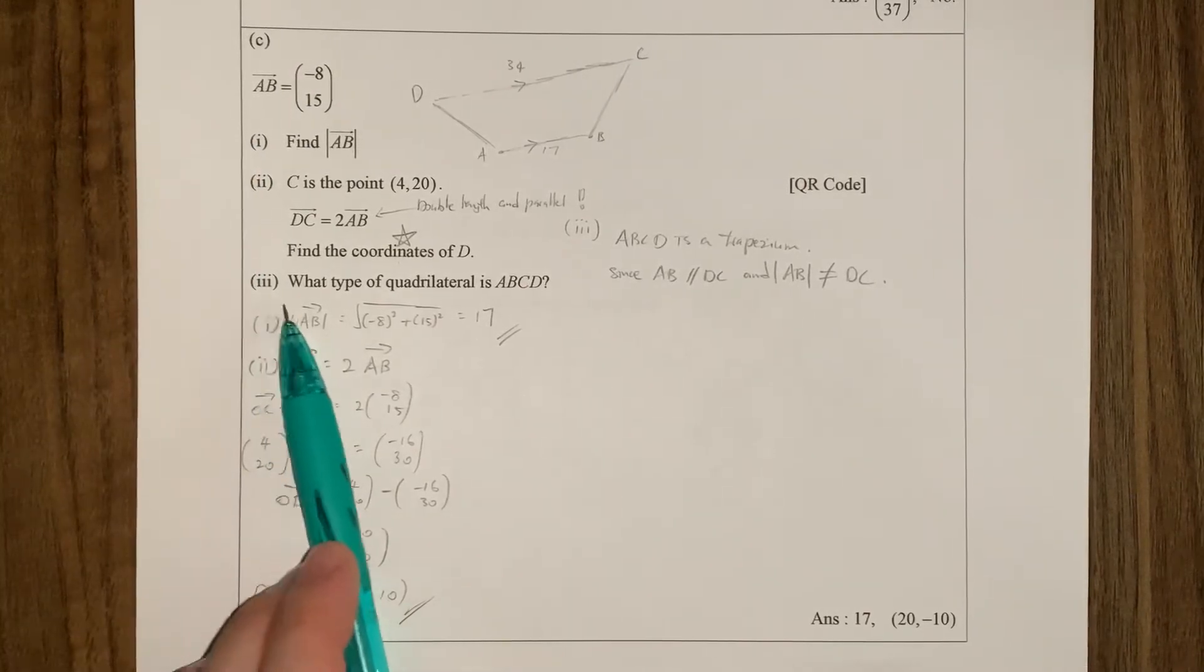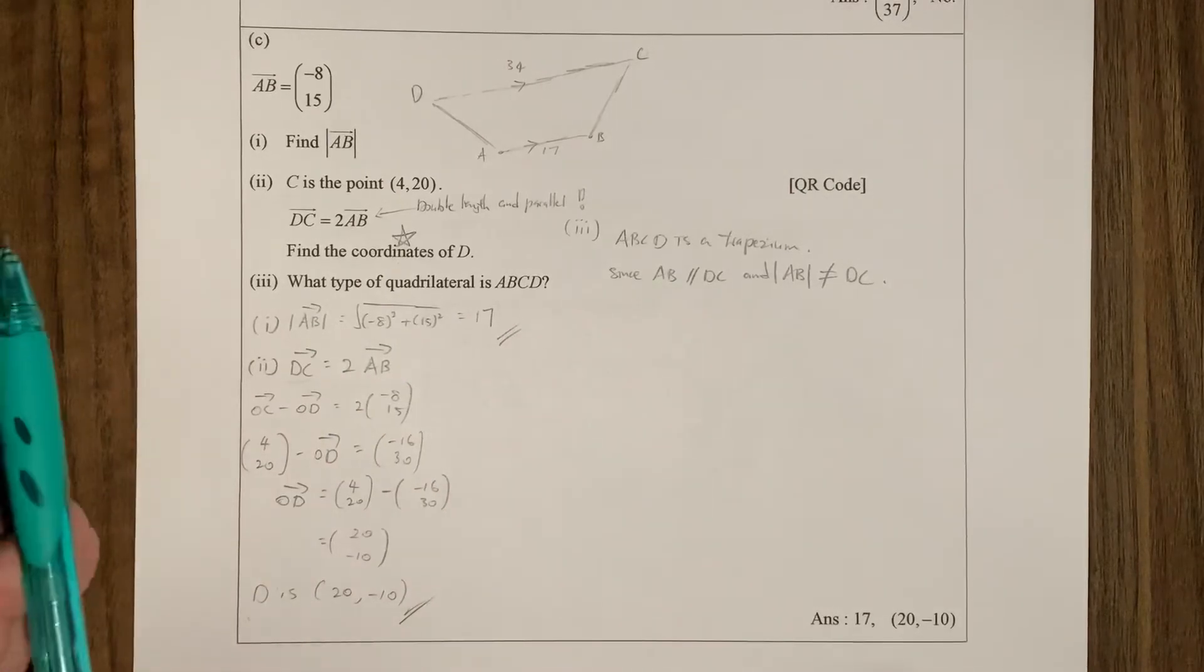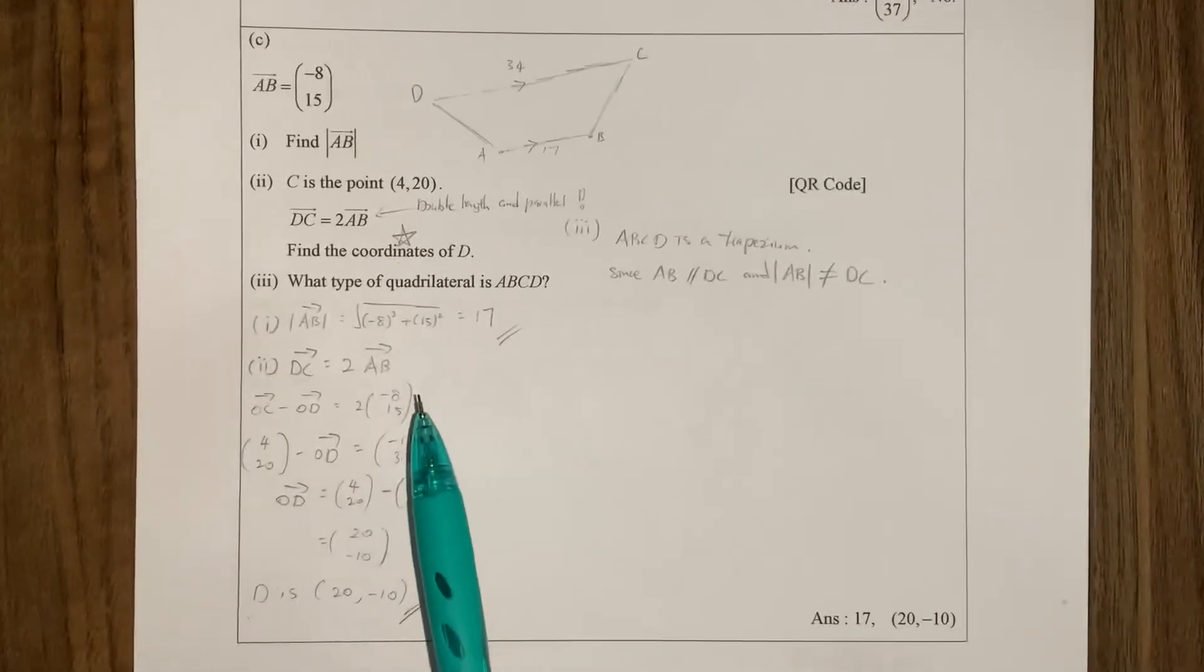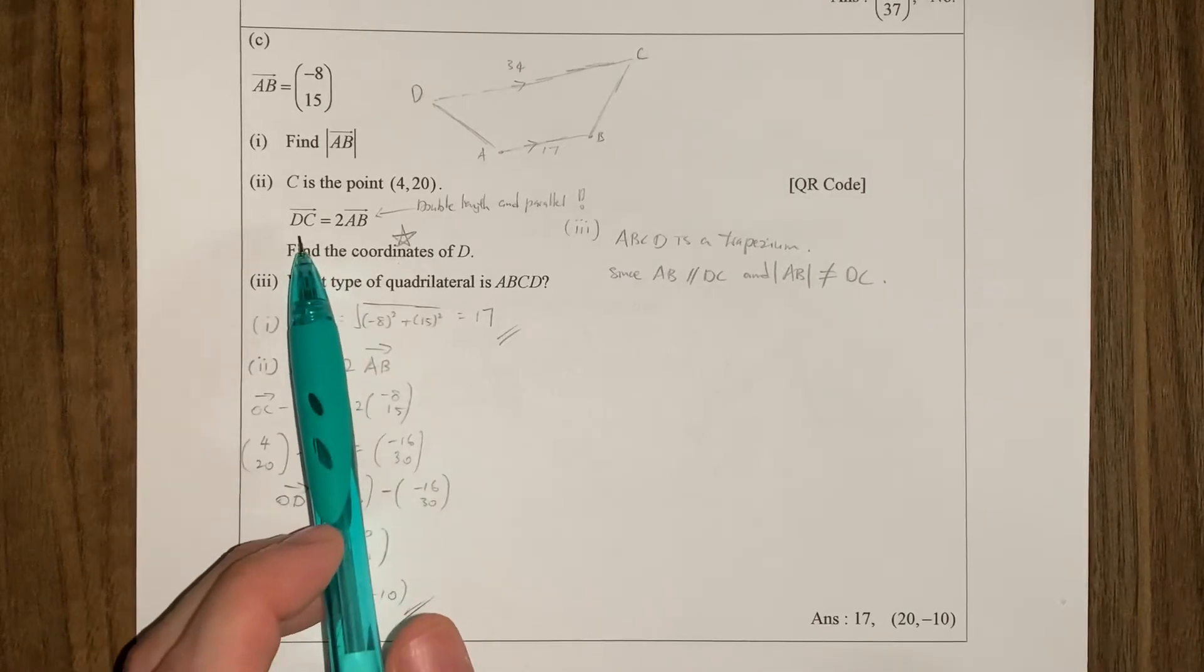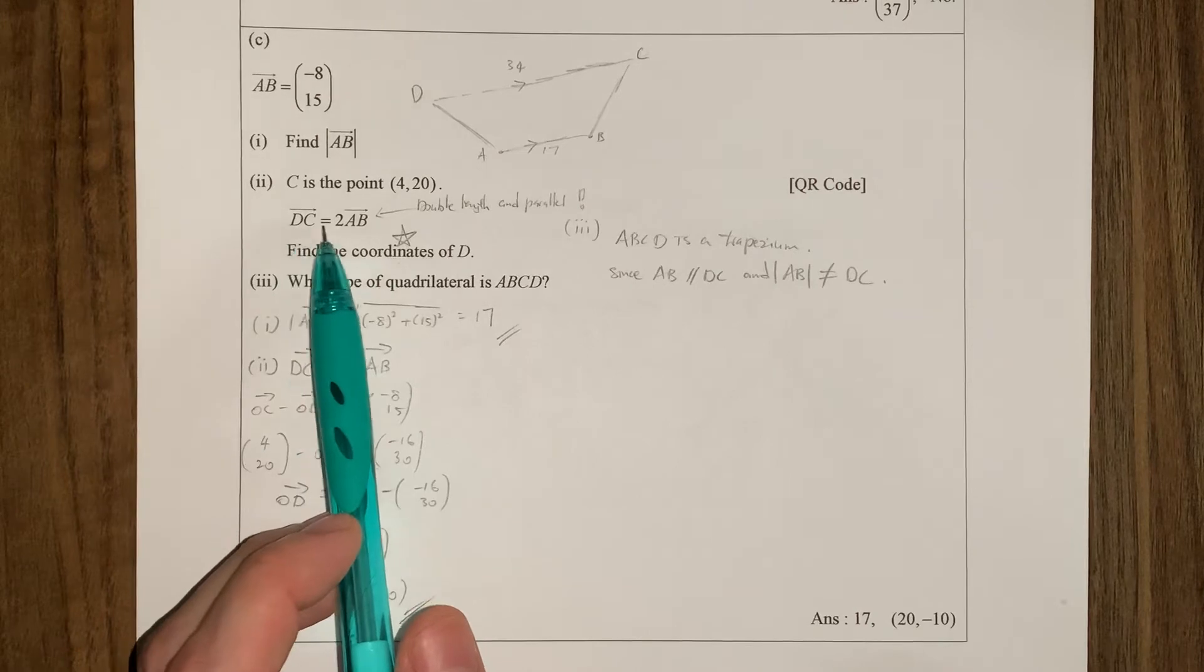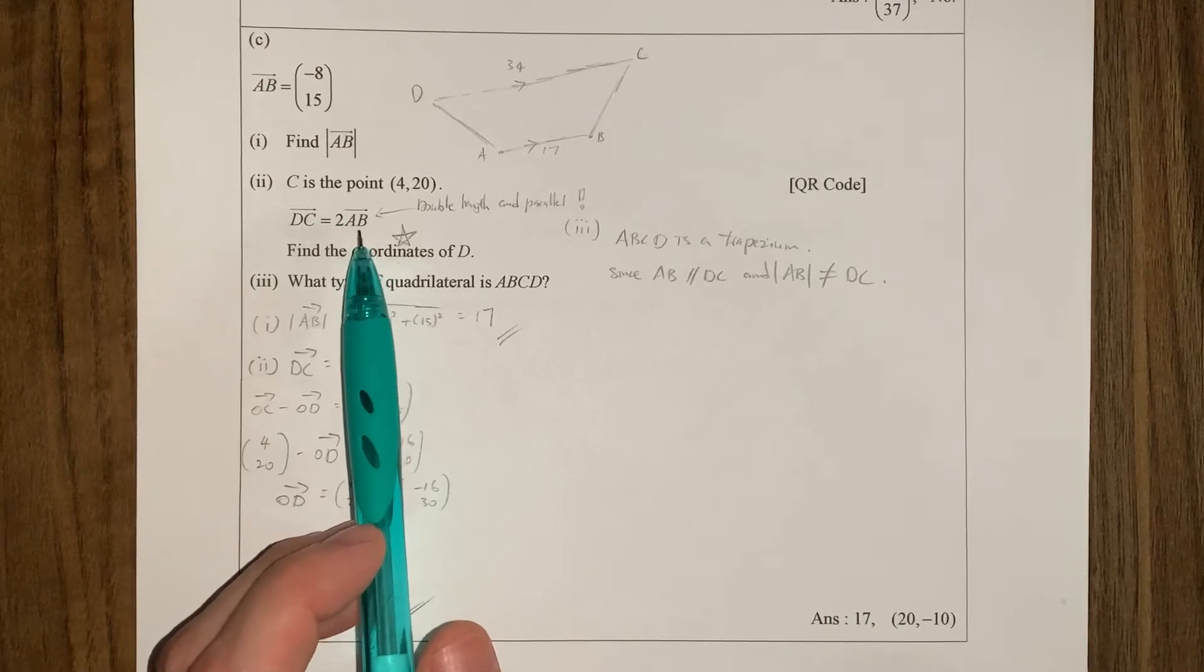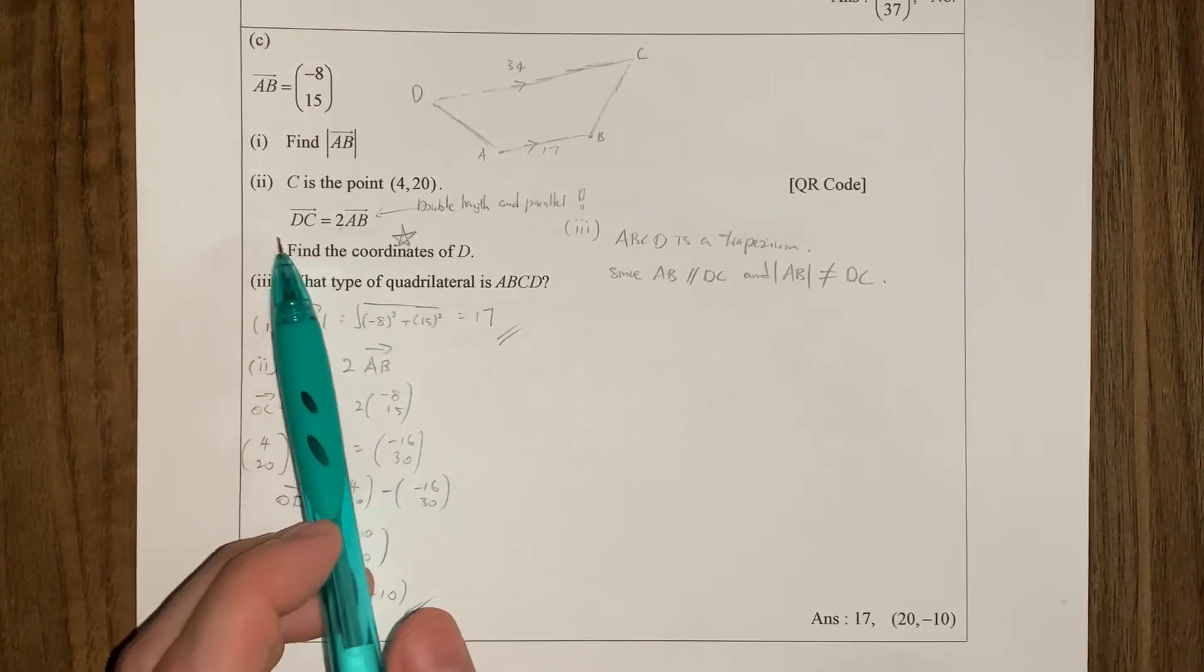So the only interesting thing is over here. This ABCD, they ask you what quadrilateral it is. Now this is quite difficult if you have never seen this before. But there are many hints here and it hinges on a lot of good concepts. So our first hint is actually over here. You can see that CD is 2 times AB. You know, if you recall the condition for two vectors to be parallel,